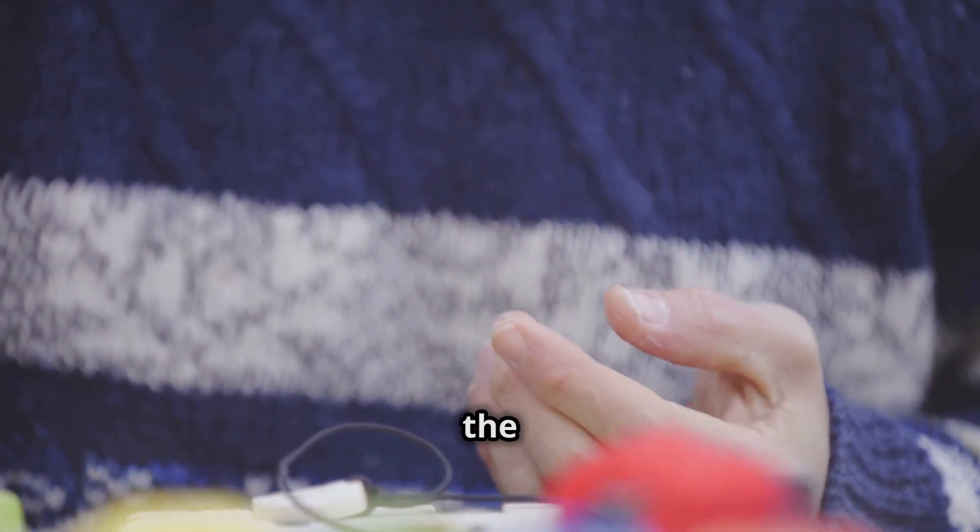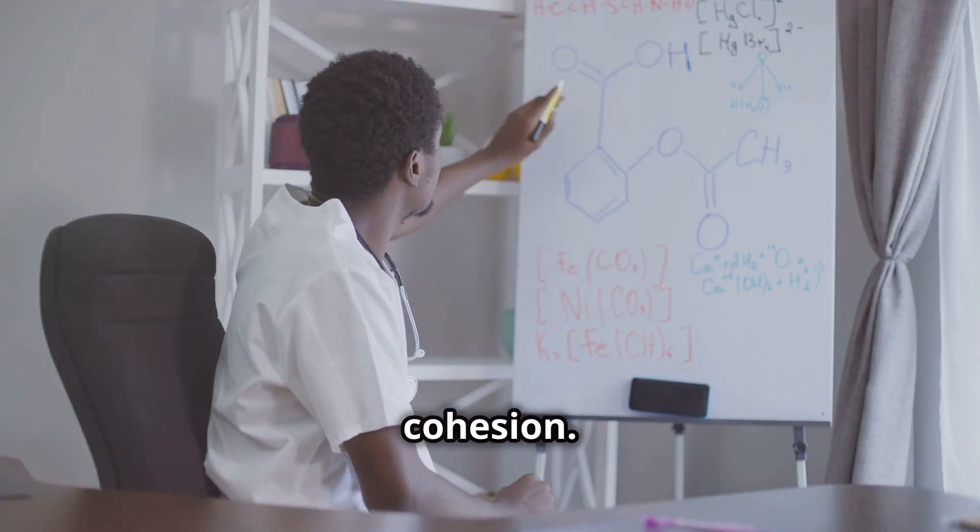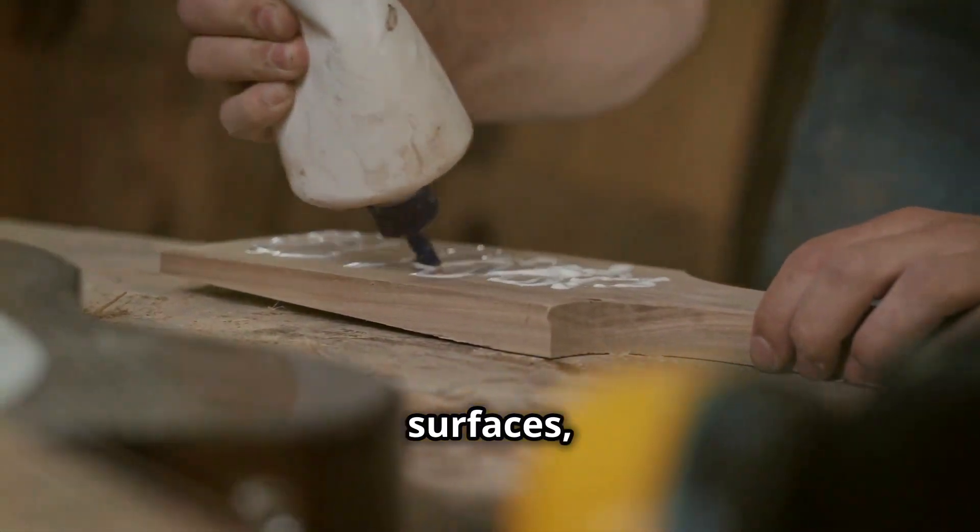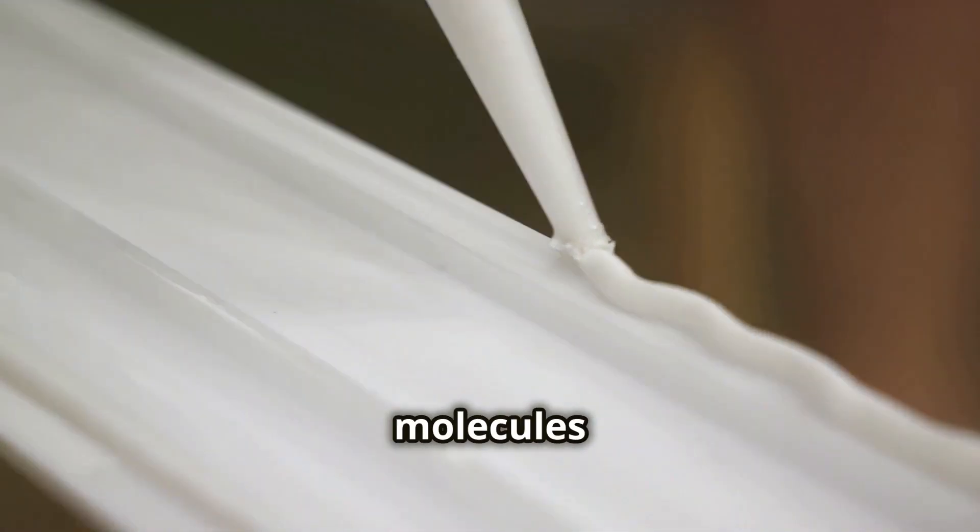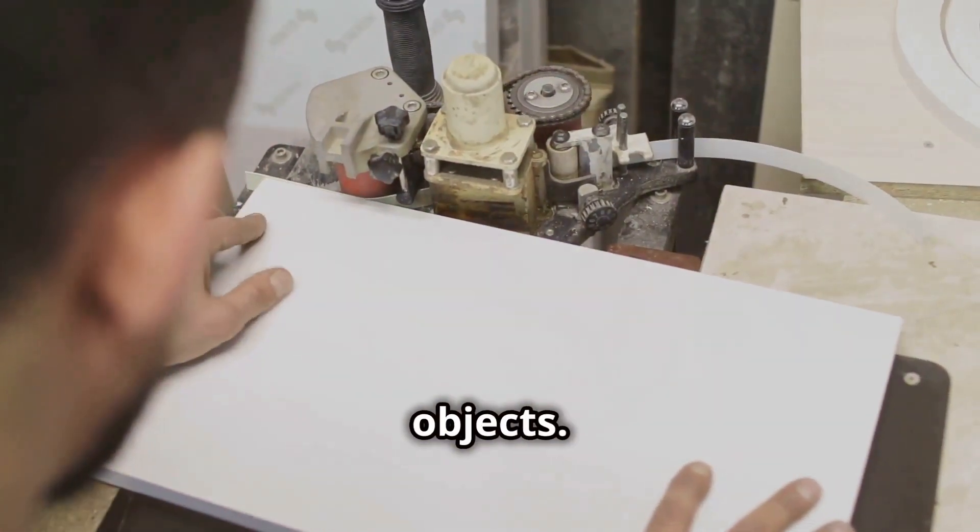Let's start with the basics. Adhesives work because of two key forces: adhesion and cohesion. Adhesion is the force that makes glue stick to different surfaces, while cohesion keeps the glue molecules sticking to each other. Together, these forces create a strong bond between objects.